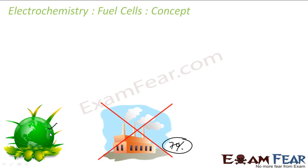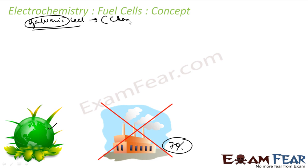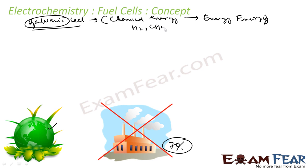Fuel cells are galvanic cells designed to convert the energy of combustion of fuels — hydrogen, methane, etc. — directly to electrical energy. They are called fuel cells. Galvanic cells are not named because Galvani created them; it is just in his honor. A galvanic cell is any cell that converts chemical energy to electrical energy directly. In a fuel cell, the chemical energy of hydrogen, methane, etc., is used.